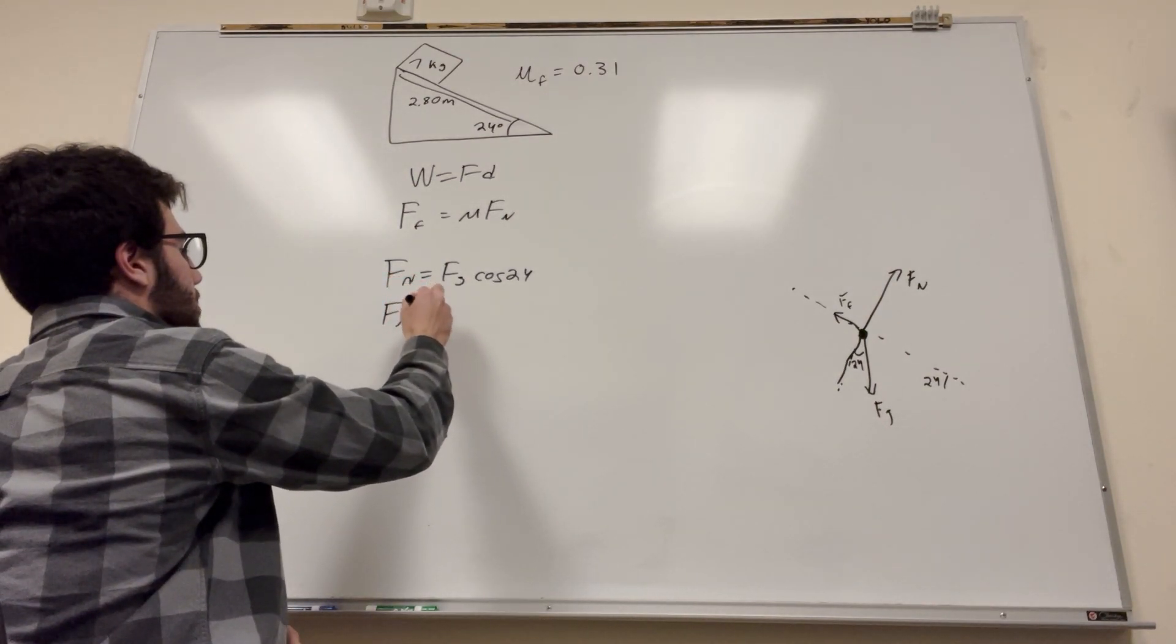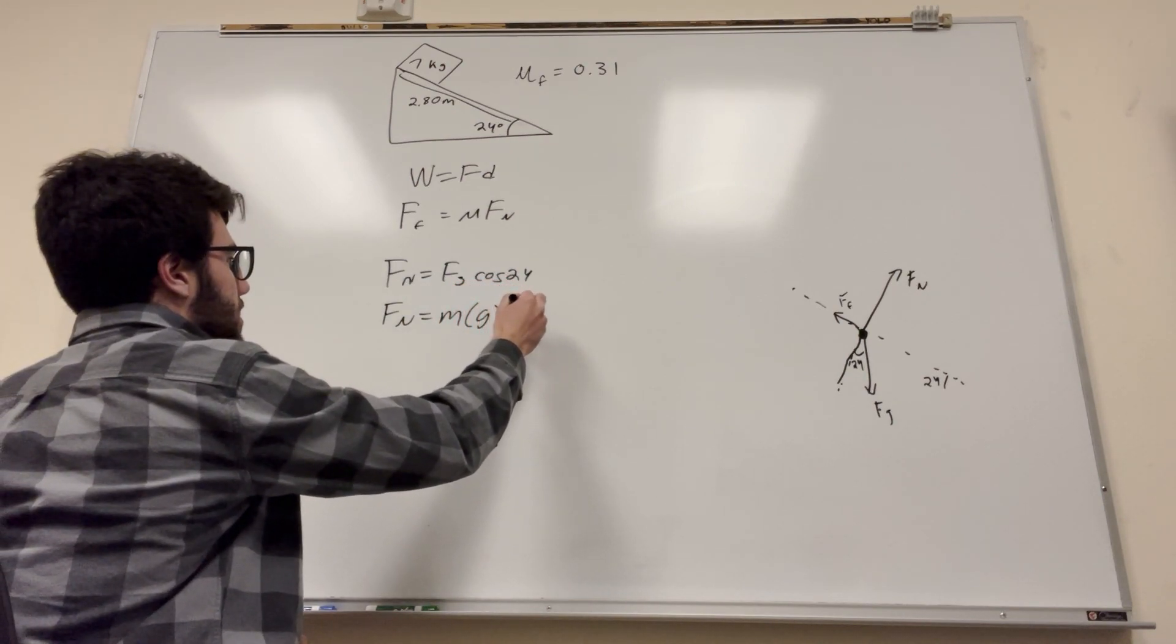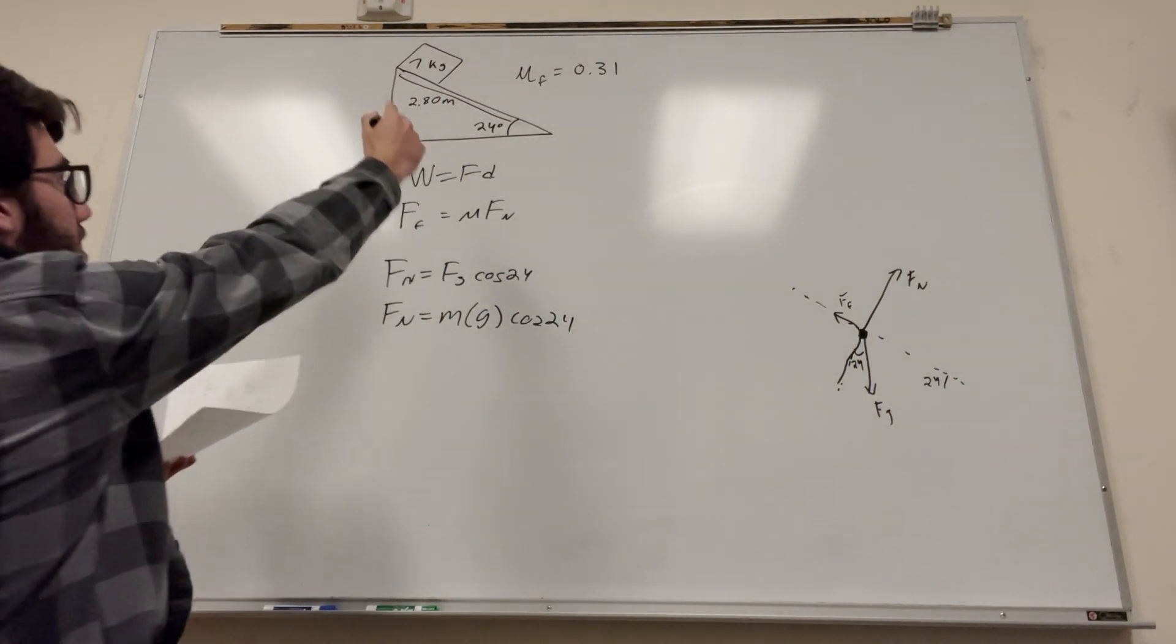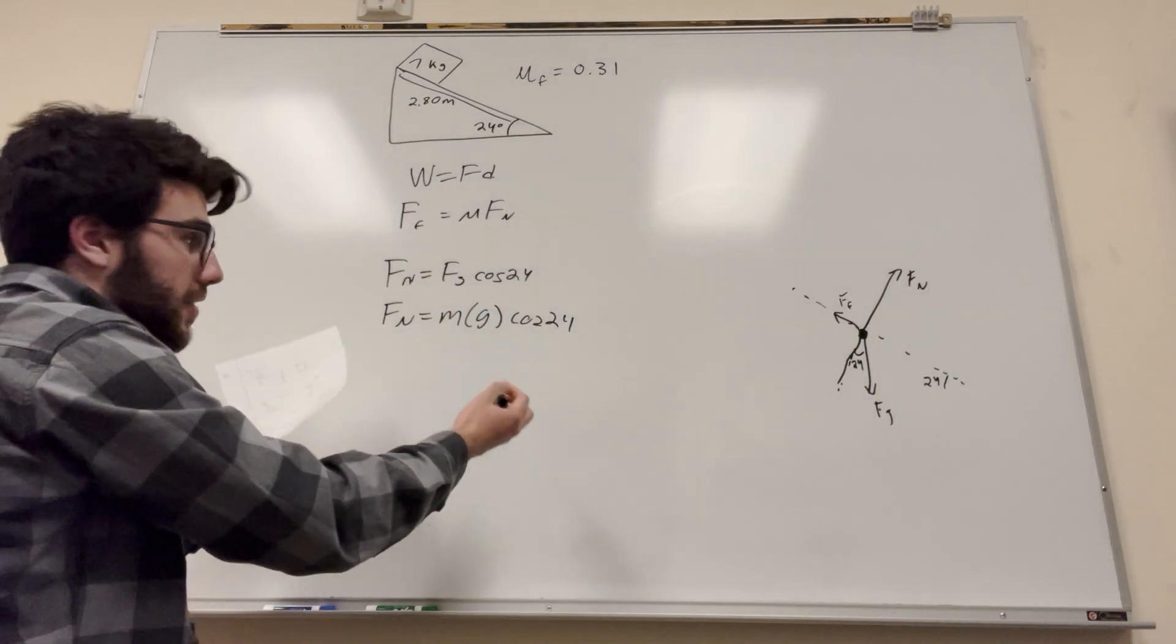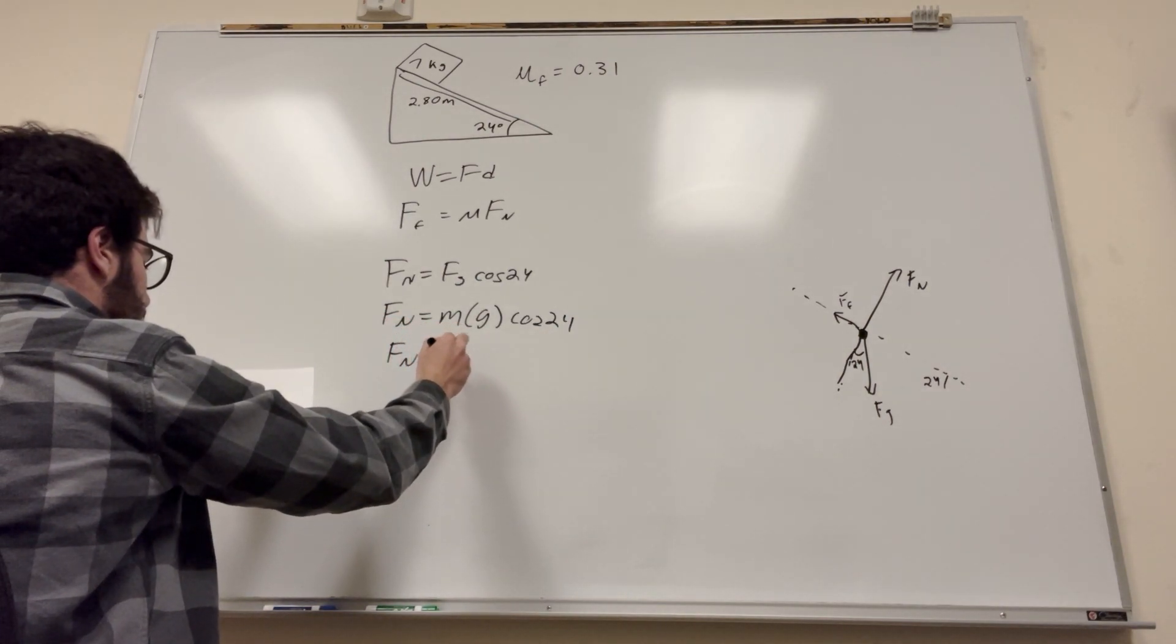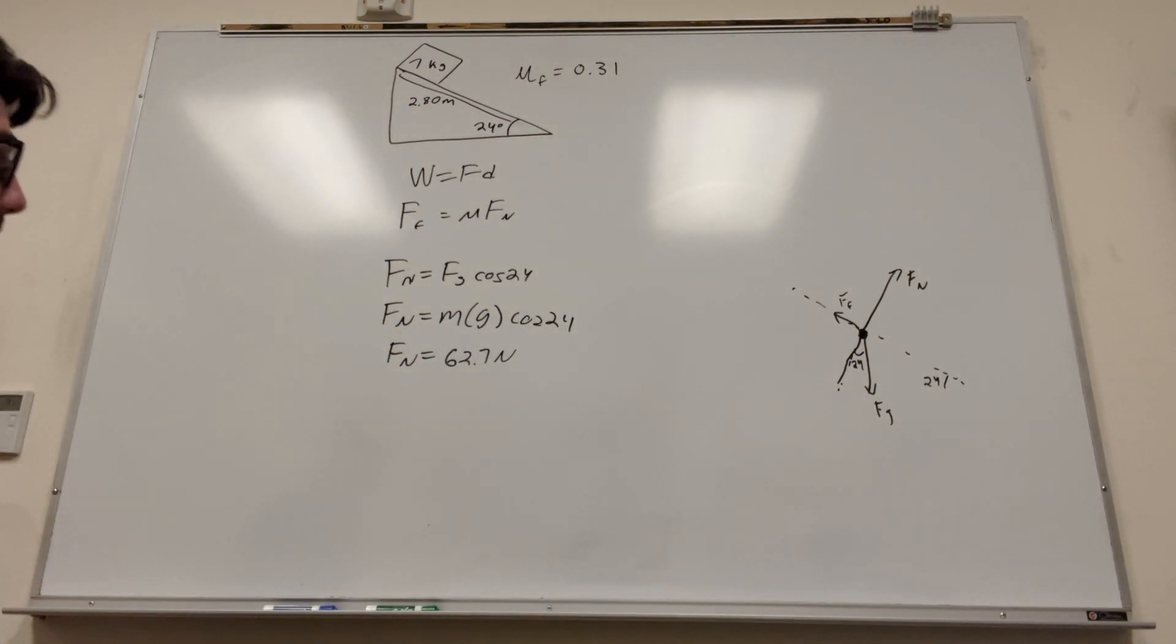So we can do this. So force of normal is equal to mass times gravity times cosine of 24. And we get the force normal. If you plug in 7 kilograms and 9.81 for gravity, force normal is equal to 62.7 newtons.